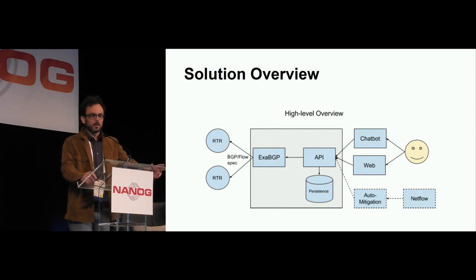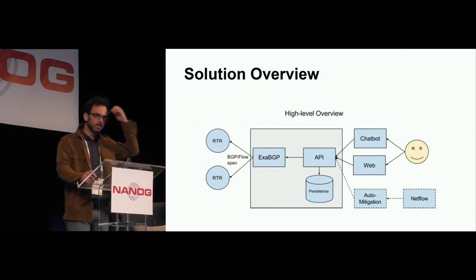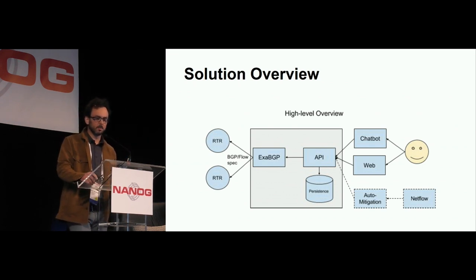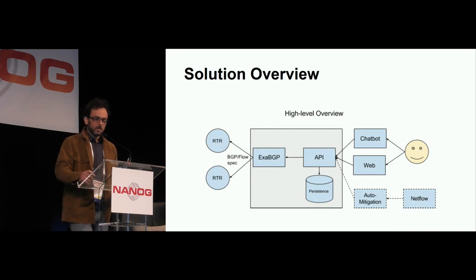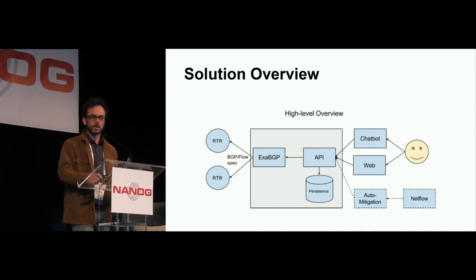So we thought, let's build something with FlowSpec that we can use quickly. And so we've used ExaBGP — everybody probably knows what that is. It's a BGP tool that is open source. It's great. We use it for other things. We thought, let's just put an API in front of it. Make sure that the API allows us to specify these filtering rules and put some persistence, some storage so we can save them. And then we have that ExaBGP instance talk to every edge router in our network. And that opens up a lot of possibilities.